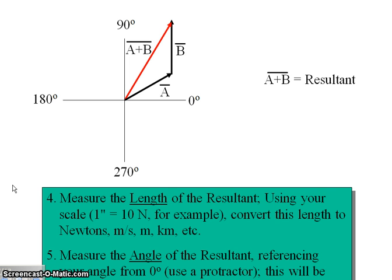You measure the length of the resultant using a ruler. Maybe two inches long. For instance, if it's two inches, then it's 20 newtons. If it's two and a half inches, it's 25 newtons. So given that scale, two inches would equal 20 newtons, 2.5 inches would equal 25 newtons. That's essentially it. Or whatever units you're measuring in: pounds, meters per second, meters per second squared.